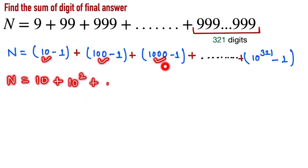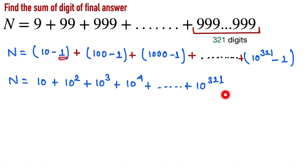can be written as 10 squared plus 10 to the power 3. It goes to the last digit, 10 to the power 321. Now here, minus 1, minus 1, and minus 1 all are common in all sets. So here we subtract 321.